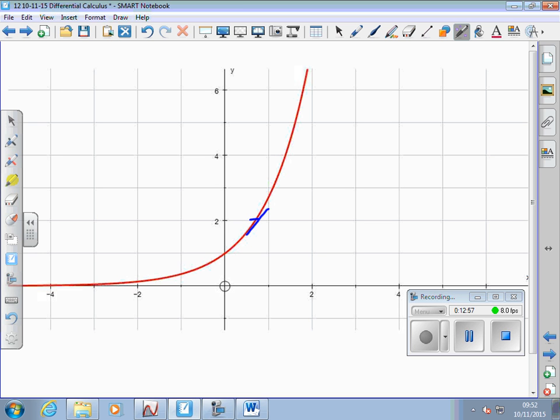So y equals e to the x, if I want to know what's the gradient of this function at that point, it's the value of the function at that point. It's two. What's the gradient at this point? It's the value of the function at that point. Four. So the exponential function, e to the x, the value of the function gives you its gradient. What's the gradient here? One. And so when the value becomes zero, what's the gradient at zero? Zero. So a special function, the exponential function.